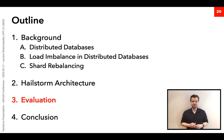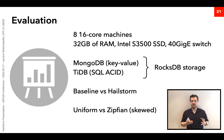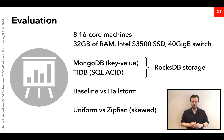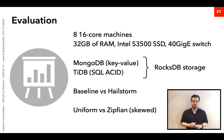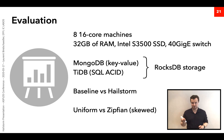For evaluation, we use eight 16-core machines with SSDs and a fast network. We test two databases: MongoDB, the most popular distributed database today with a key-value store interface, and TiDB, an increasingly popular database offering SQL transactions. Both use RocksDB — an LSM-based storage engine developed by Facebook — as their storage engine. We compare the vanilla database baseline with Hailstorm, and in each case compare uniform versus Zipfian (skewed) key distributions.